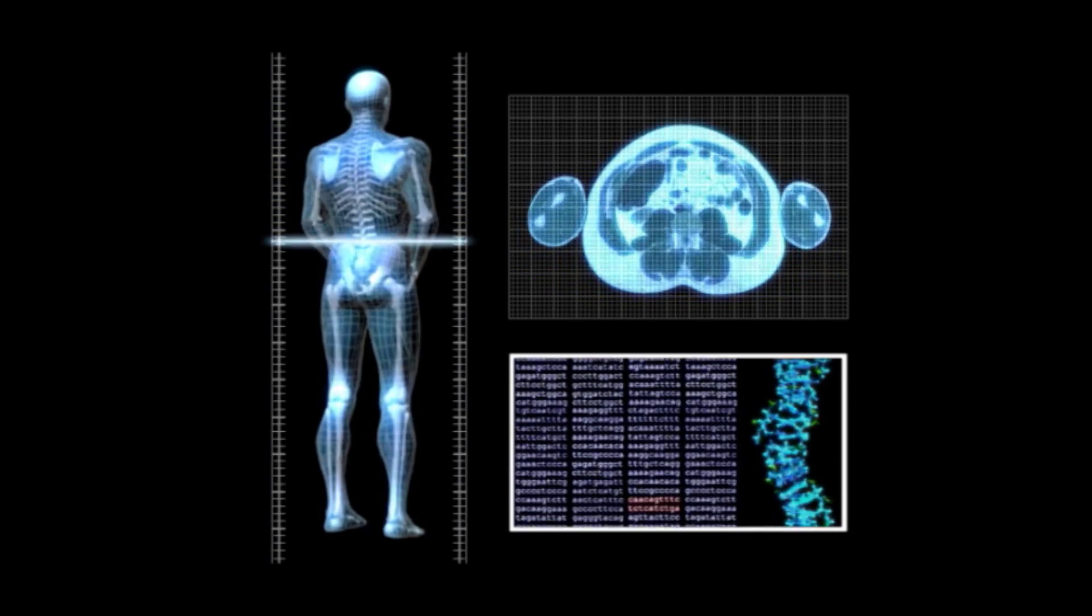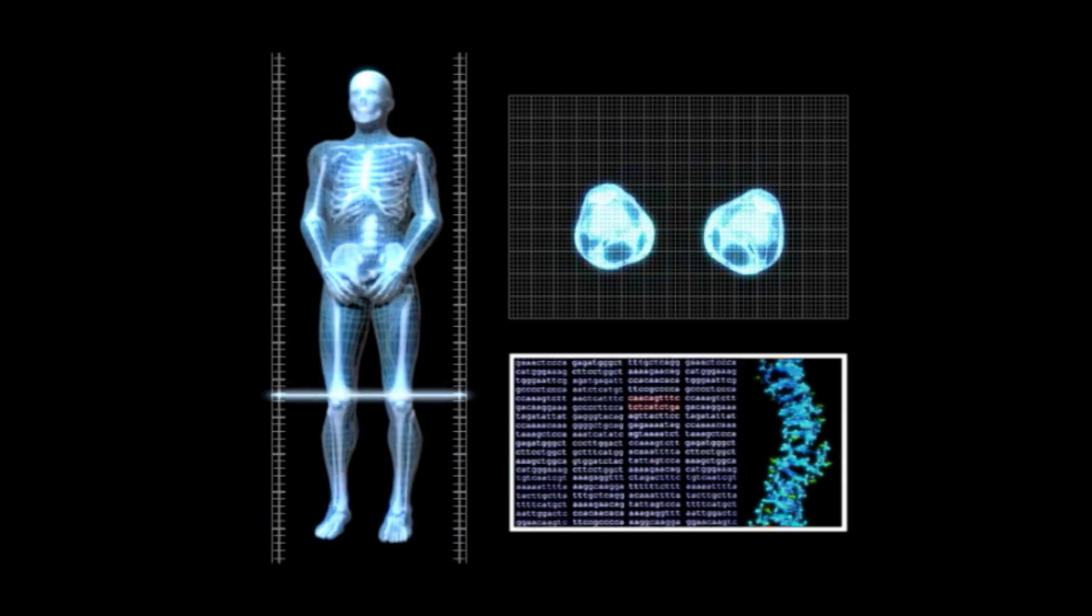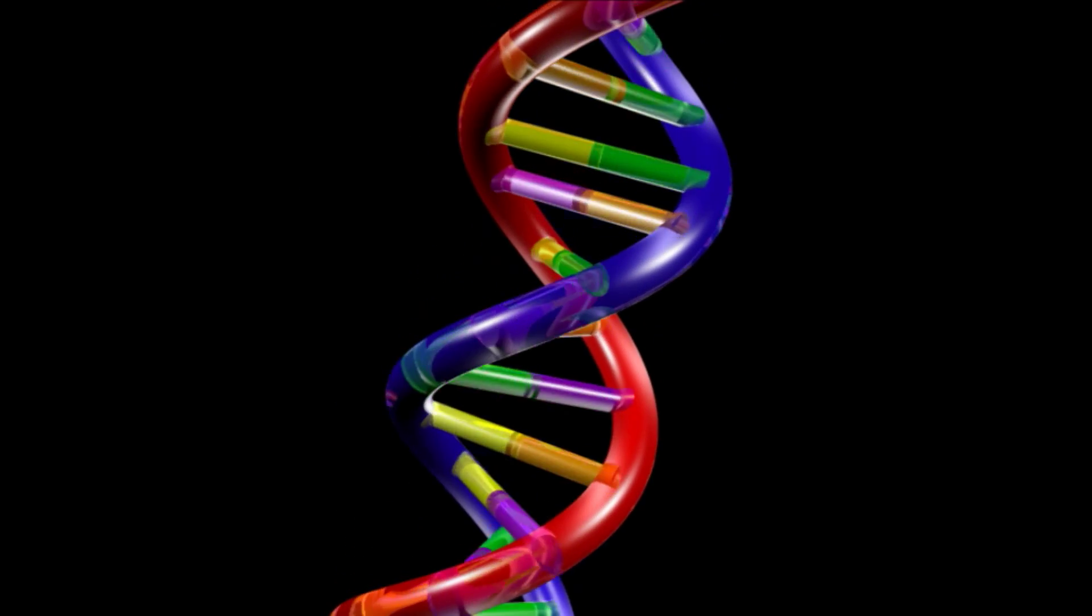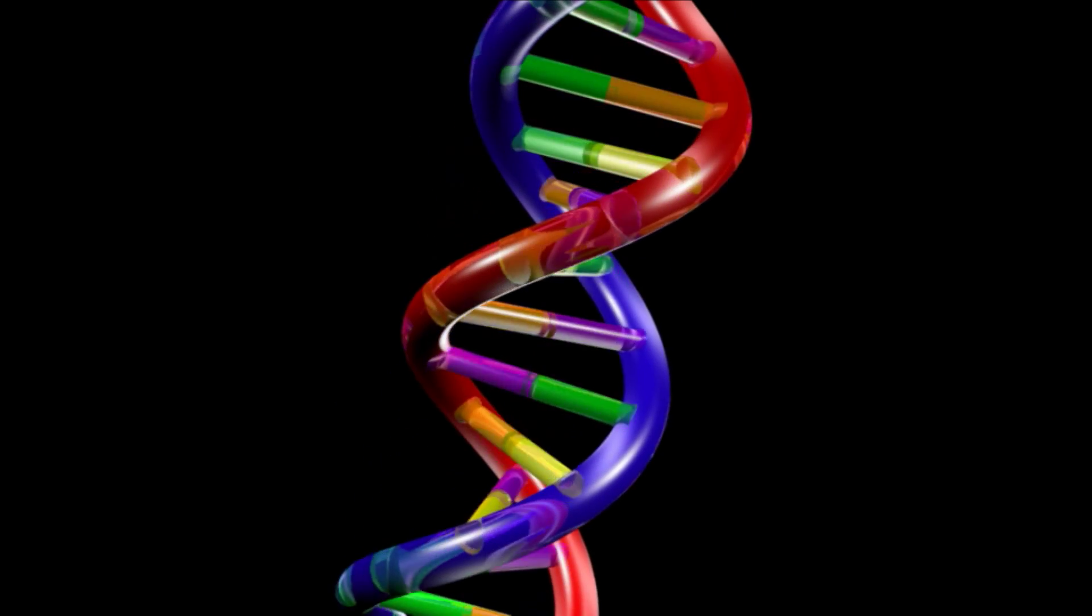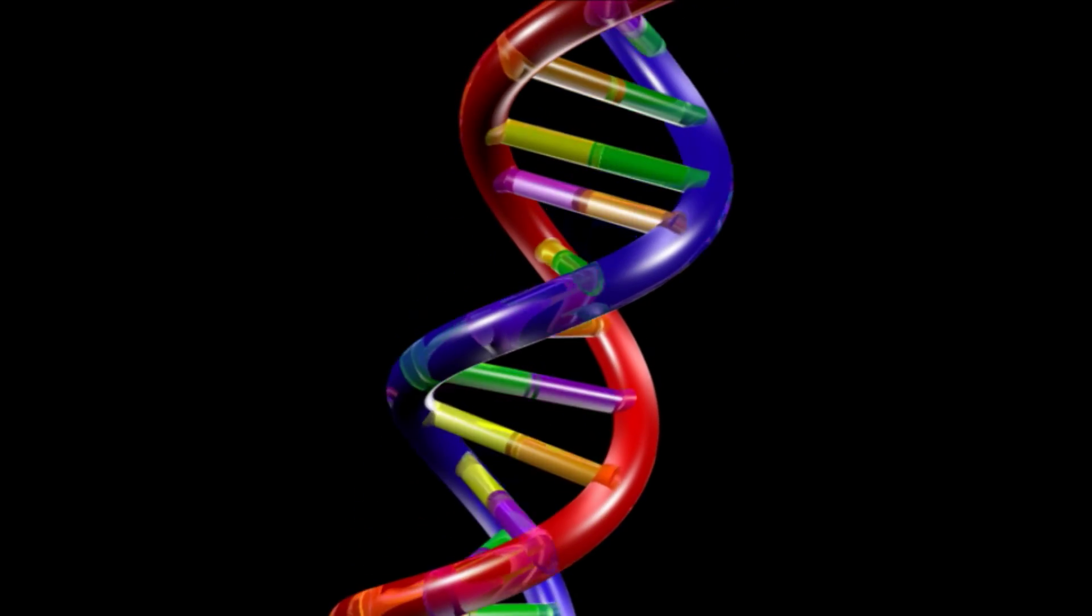DNA is the instruction manual for our bodies. The graphical representation of DNA is two spirals with ladder steps in between, sort of like a circular staircase.